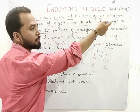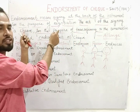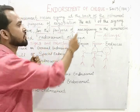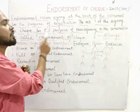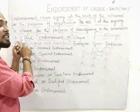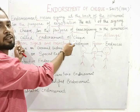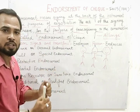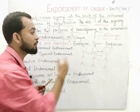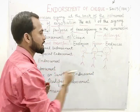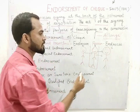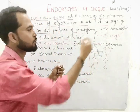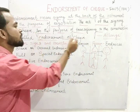So endorsement means signing at the back of the instrument for the purpose of transfer. In case of order check, general crossing, and special crossing — the act of signing a check for the purpose of transferring it to someone else is known as endorsement of check. So if Mr. B wants to transfer to Mr. C, he writes on the back side of the check and signs it — that process is endorsement.